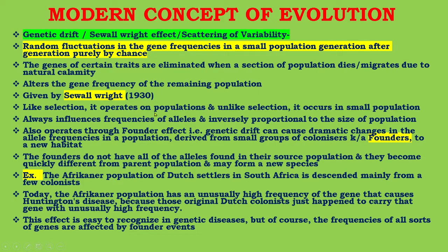Selection operates on populations, and unlike selection, genetic drift occurs in small populations. It always influences allele frequencies in inverse proportion to the size of the population. It also operates through the founder effect — genetic drift can cause dramatic changes in allele frequencies in a population derived from a small group of colonizers, known as founders, to a new habitat. The founders do not have all the alleles found in their source population, and they become quickly different from the parental population and may form a new species.